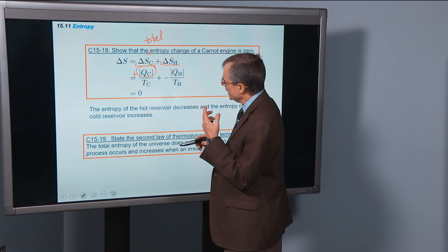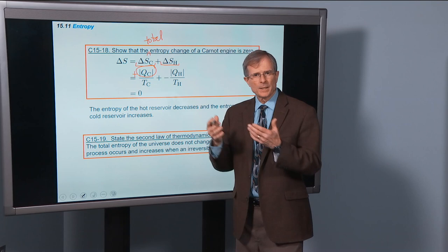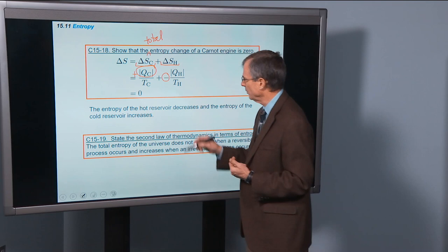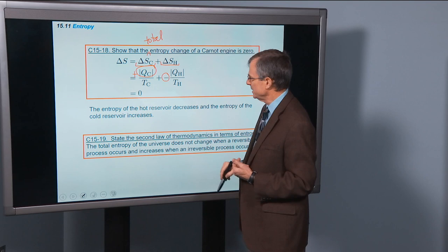Now, the change in entropy of the hot reservoir has to reflect the idea that I'm taking heat from the hot reservoir. So instead of adding an amount of heat to it, I'm subtracting it. So that's why this change in entropy, or the heat added, is a negative number divided by Th.